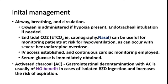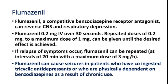The antidote for benzodiazepine poisoning is flumazenil. The dose is 0.2 mg IV over 30 seconds. If the patient has isolated benzodiazepine toxicity, they will immediately improve. Repeated doses of 0.2 mg can be given up to a maximum dose of 1 mg until the desired effect is achieved. If the clinical condition relapses, flumazenil can be repeated.